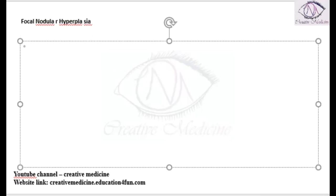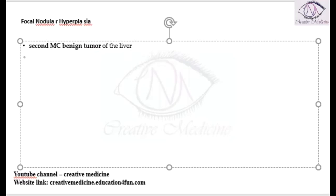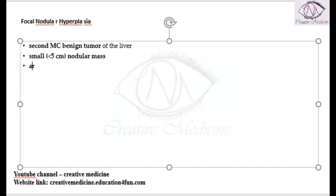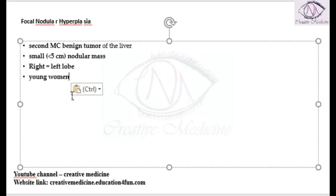Focal nodular hyperplasia is the second most common benign tumor of the liver. It is a small nodular mass with size less than 5 centimeters, arising from the normal liver. There is equal frequency of occurrence in both right and left lobes. It is most commonly seen in young women and is associated with oral contraceptive usage.